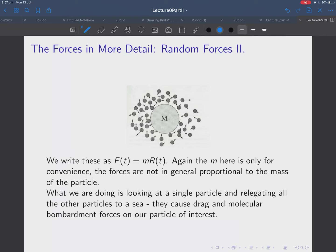So, we're going to write these forces as M times R(t). So, F is the force, and we'll explicitly put a time here, because it varies with time. They fluctuate over time. M here is only for convenience again. Basically, it's going to drop out. M times R(t) is independent of M normally. Okay. And what we're looking at here is a model where we take one particle, and we relegate all the other particles to a kind of sea.